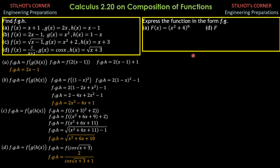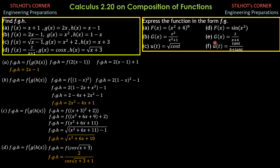Express the function in the form f of g. So we have to directly find f and g. Therefore, g of x should be x squared plus 4, while f of x is x to the 8th. So f of g is equal to: substituting g of x which equals x squared plus 4, that quantity raised to the 8th. Those should be the two functions.